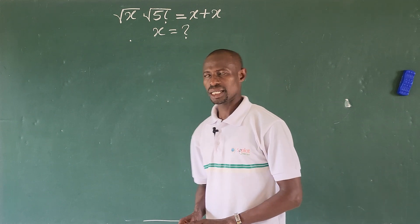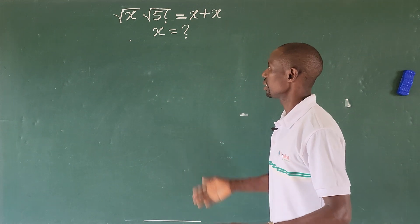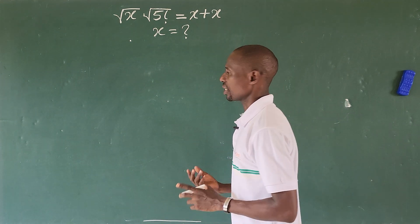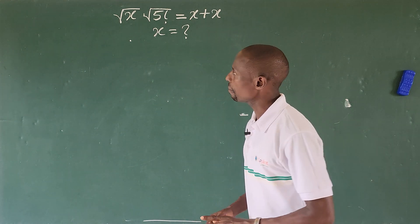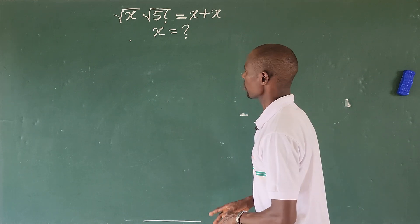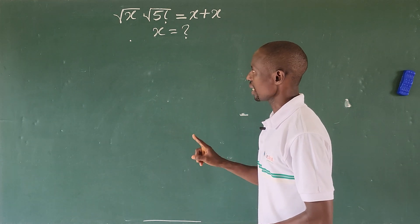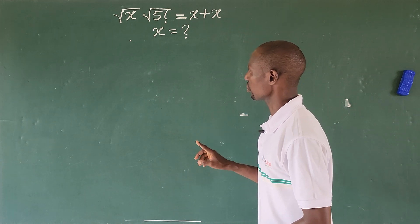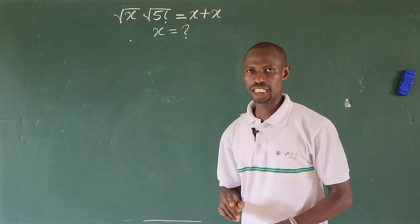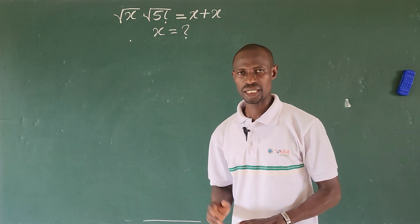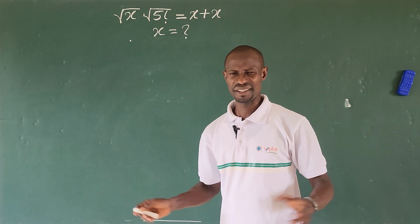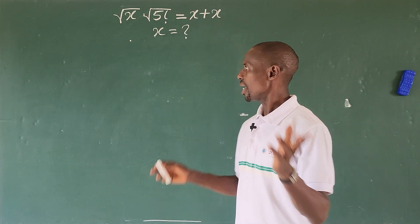Hello everyone, welcome to today's class. Check out this question here — it's a radical equation, but a very simple one. The question is: the square root of x times the square root of 5 factorial equals x plus x. What is the value of x?